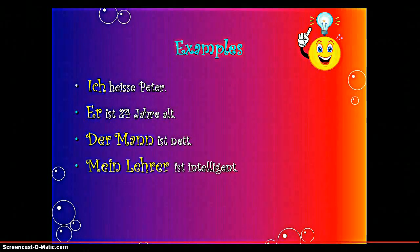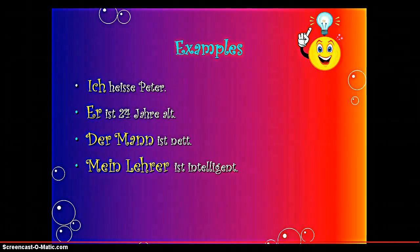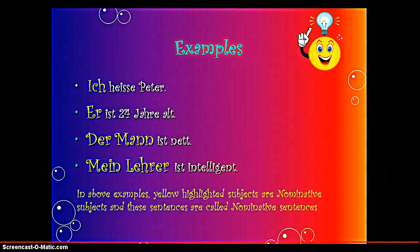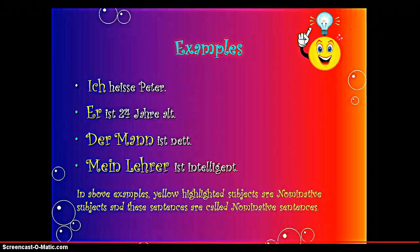'Mein Lehrer ist intelligent.' As we have discussed earlier, mein Lehrer comes before ist, so it is the Nominative subject. In the above examples, the yellow highlighted subjects are Nominative subjects and these sentences are called Nominative sentences. So far, we are clear about Nominative sentences.